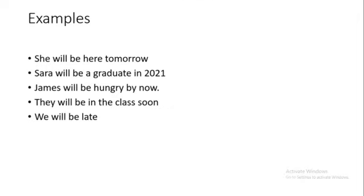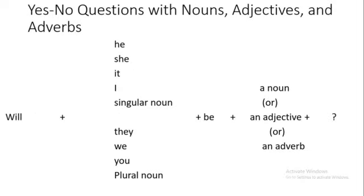We have finished affirmative and negative sentences. Now we will move to questions in the non-movement type — حالة السؤال بالقسم غير الحركي. The question also starts with will, plus he, she, it, I, or singular noun, or they, we, you, or plural noun, plus be, plus either a noun, or an adjective, or an adverb, plus a question mark.